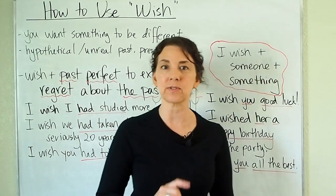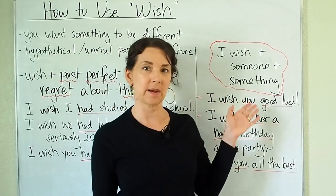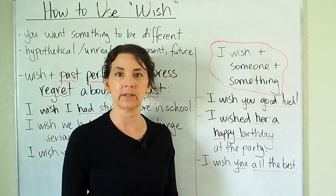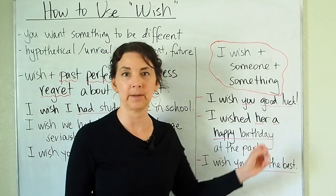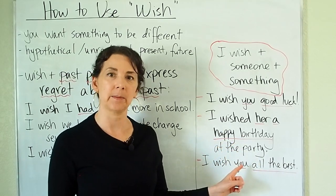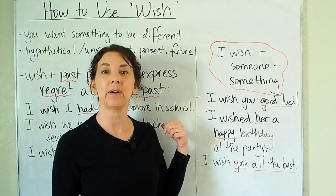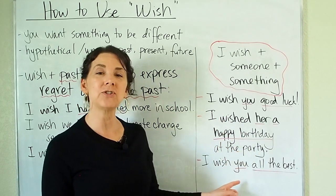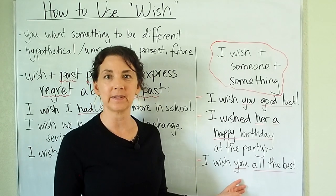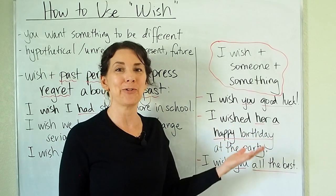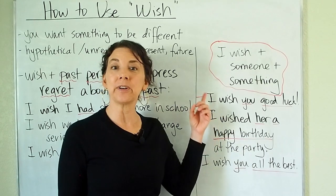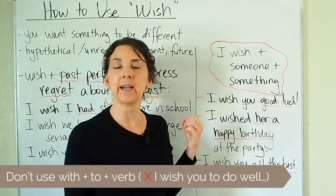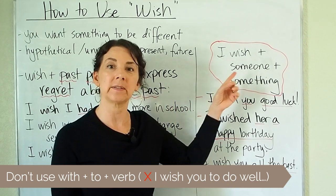Finally, let's look at one last use of the verb wish, which is to wish someone something. Here we're going to use wish plus nouns. For example: I wish you good luck — I wish someone something. Or: I wished her a happy birthday at the party. Here wish is in the past tense because the party happened in the past. Or: I wish you all the best — this is a very common sentence meaning I wish something for you. But notice that we're not going to use wish with to. For example, I wish you to do well in school — we cannot say that. We are going to use wish plus the person plus a noun.